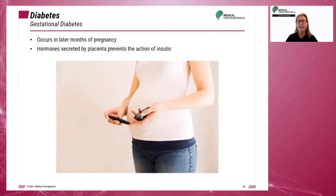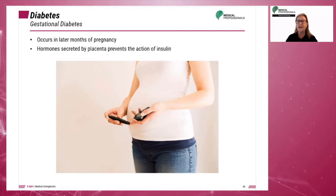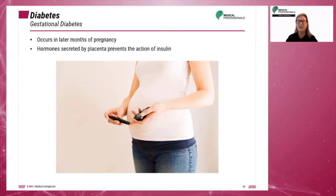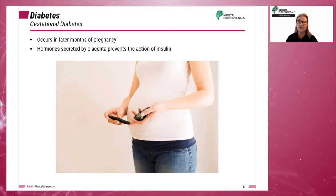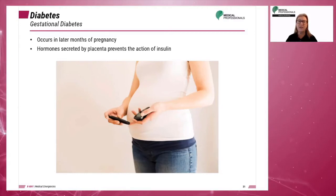In gestational diabetes, hormones secreted by the placenta prevent the body's regulation of insulin and result in the buildup of glucose in the blood. The body's insulin production is not sufficient to handle the additional glucose production and the result is high blood sugar levels. Gestational diabetes is not generally an emergency in radiology.